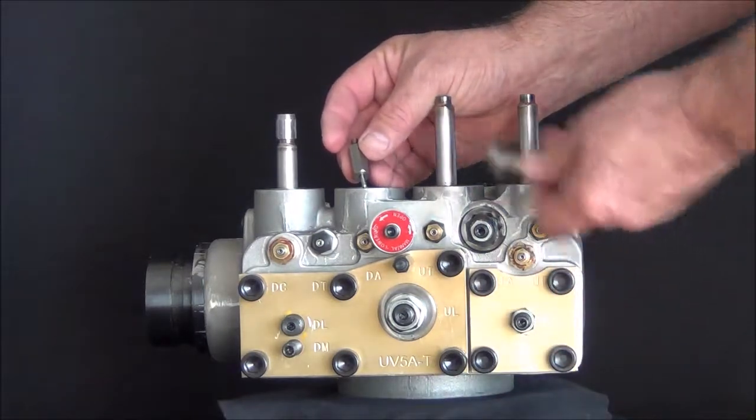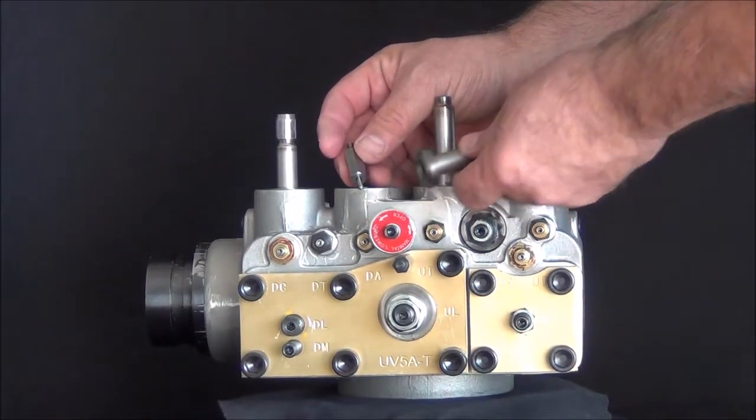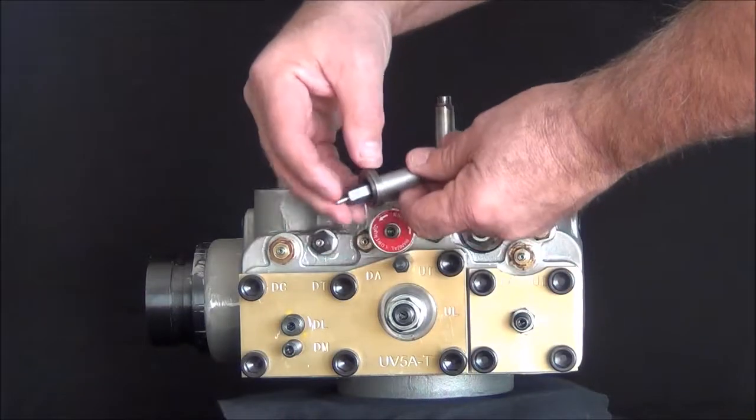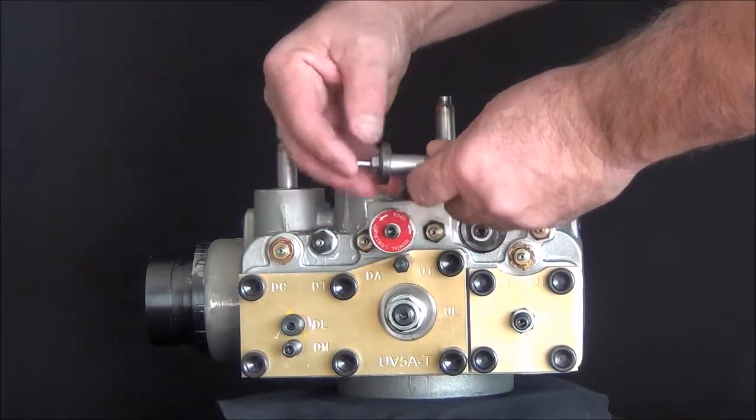If this plunger comes out with the solenoid tube, that is a problem. It should move quite freely on the inside. It should be able to move in and out with no difficulty.